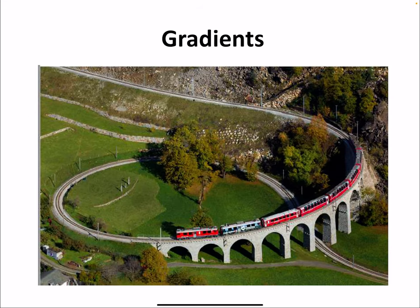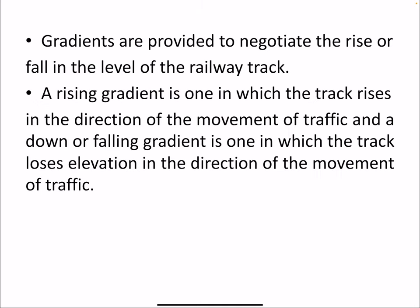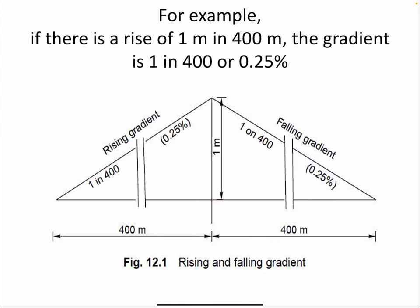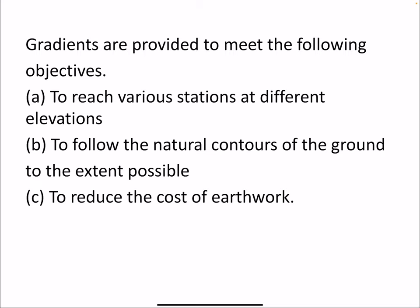Now we'll talk about gradients. Gradients are provided to negotiate the rise or fall in the level of a railway track. A rising gradient is one in which the track rises in the direction of movement of traffic, and a falling gradient is one in which the track loses elevation in the direction of traffic. For example, if there is a rise of one meter in 400 meters, then the gradient is 1 in 400, or 0.25%. Gradients are provided to reach various stations at different elevations, to follow the natural contours of the ground, and to reduce the cost of earthwork involving cutting and filling.